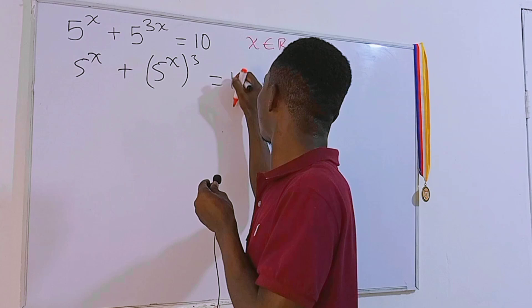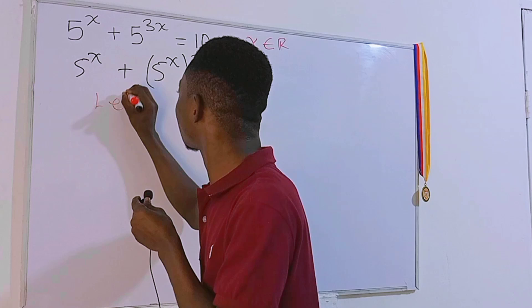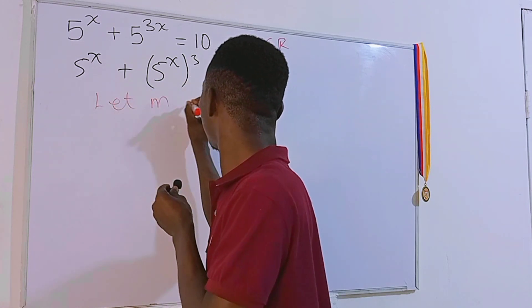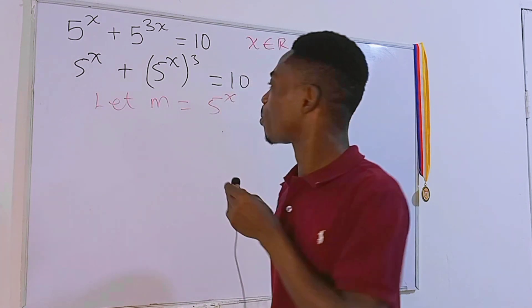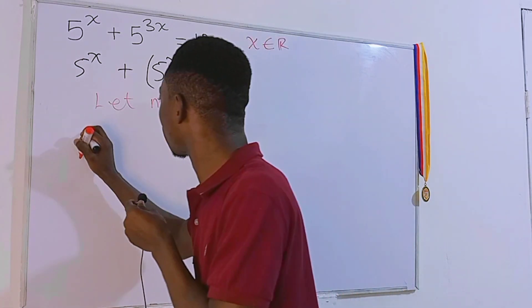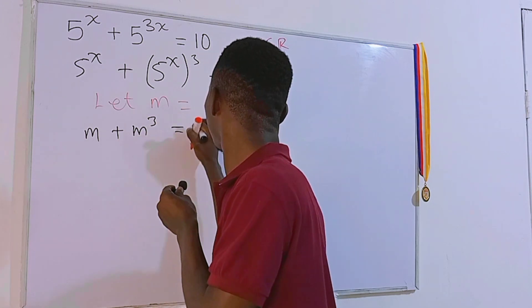This time around we go ahead and let a variable - of course I'm going for m because my name starts from m - to be equal to 5 to the power x. And the new equation is actually going to be m plus m to the third power equals 10.